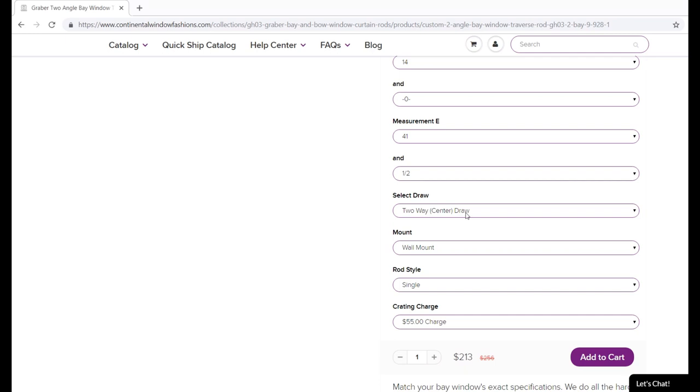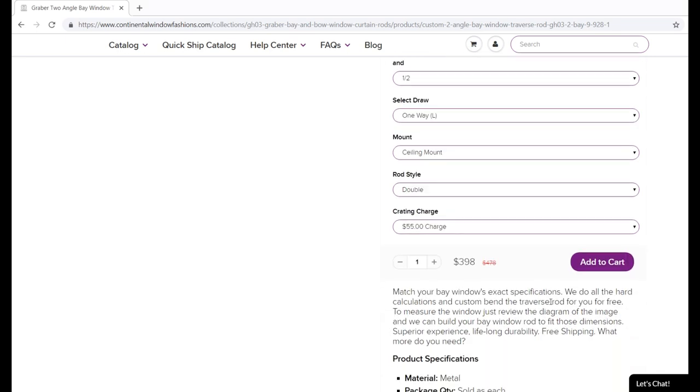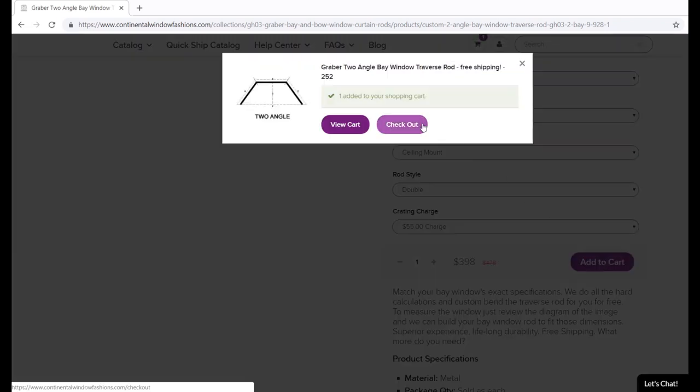You will also be asked how your curtains are going to be drawn. If the curtains are going to open to both the left and right, choose a two-way or center draw. Alternatively, specify either the left or the right-hand side. You must also indicate whether the rods are going to be mounted on the wall or ceiling. This will determine the type of bracketry provided, so it is essential to choose correctly. Lastly, you must choose either a single or double rod. Double rods are useful if you plan to hang an additional layer of curtaining, like blackout lining or sheers.